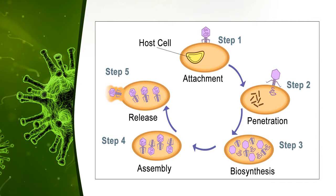Step 3 is biosynthesis: once the phage DNA reaches the cytoplasm of the host cell, many copies of phage DNA, enzymes, and capsid proteins are synthesized using the cellular machinery of the host cell. Complete phages cannot be found in the host cell at this stage, but individual DNA and protein components can be detected.